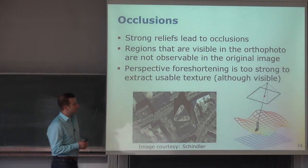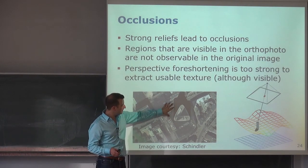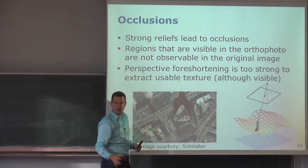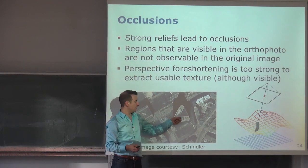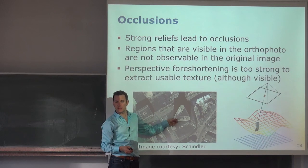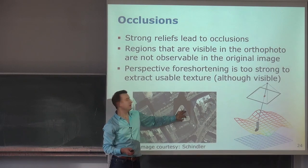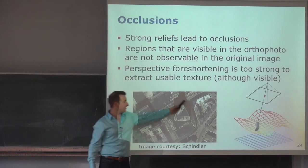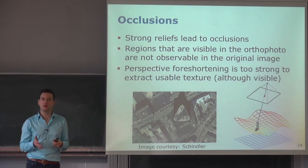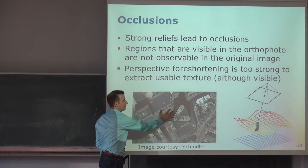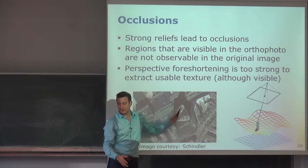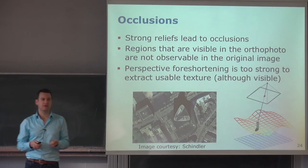The second error source is occlusions. A typical situation is where the image was taken from an angle so a building creates an occlusion. Even if the building is correctly represented in the digital surface model, there's simply a region that was not observed. These black areas in the orthophoto are areas not observed due to occlusions, because the image was taken from the side rather than directly above.